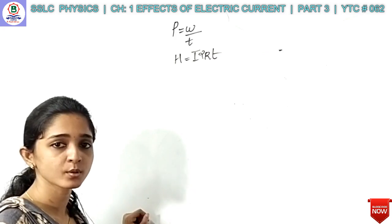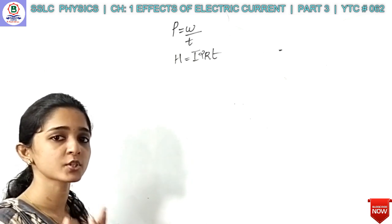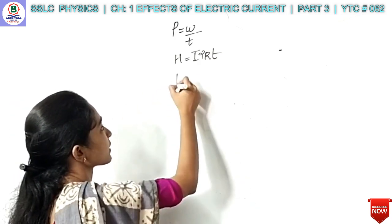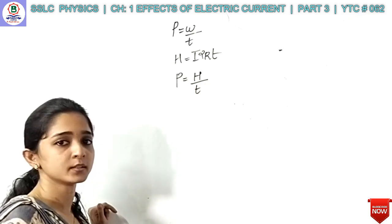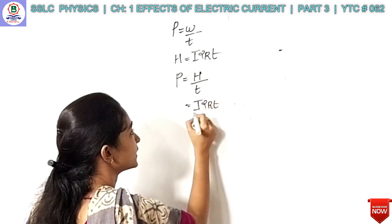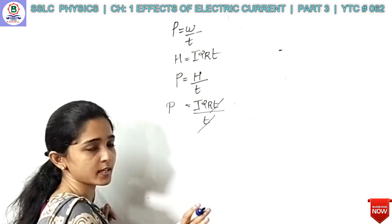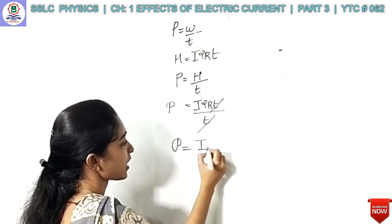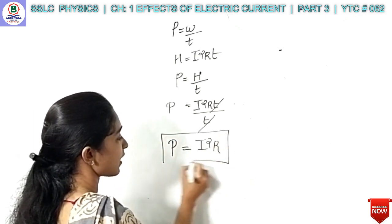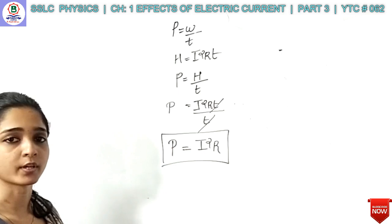What is Joule's law? How do we convert it to power? We will change the equation from W — H should be equal to W. We can change the equation. P is equal to H by t. What is the value? I squared R t. I squared R t divided by t — this is the power. So P equals I squared R.